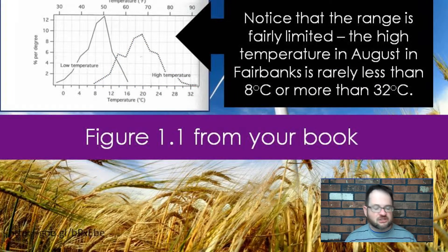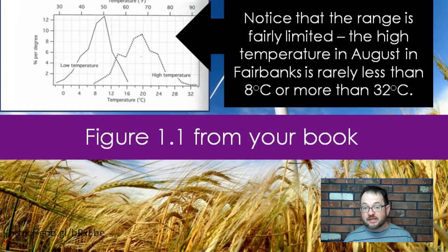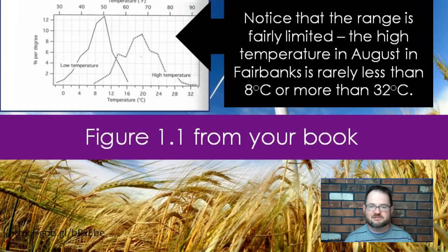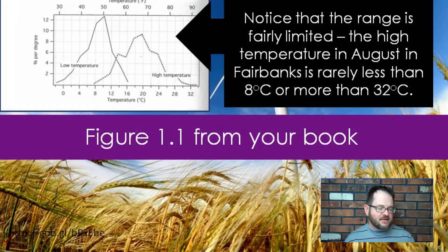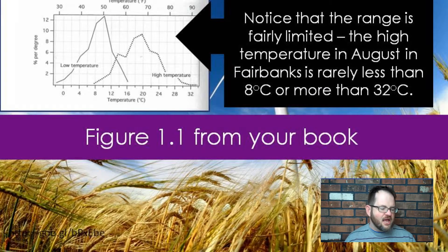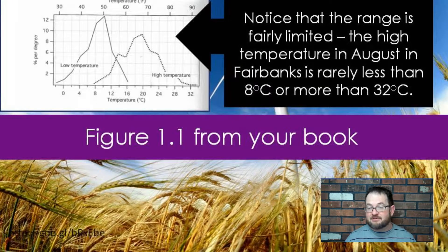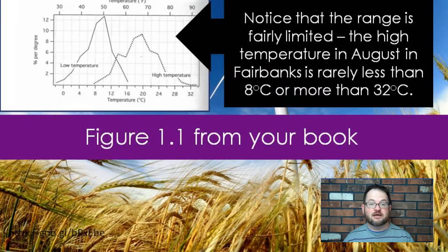In this case, notice that the range is fairly limited. The high temperatures in August are hardly ever less than 8 degrees Celsius, and they're hardly ever more than 32 degrees Celsius — it's basically 0% of the time the high is greater than 32 or the low is less than 8. That's still a pretty big range: 8 degrees is right about 48 Fahrenheit, and 32 degrees is right around 90. We can learn a lot about the climate of a location by understanding how temperatures vary from year to year.